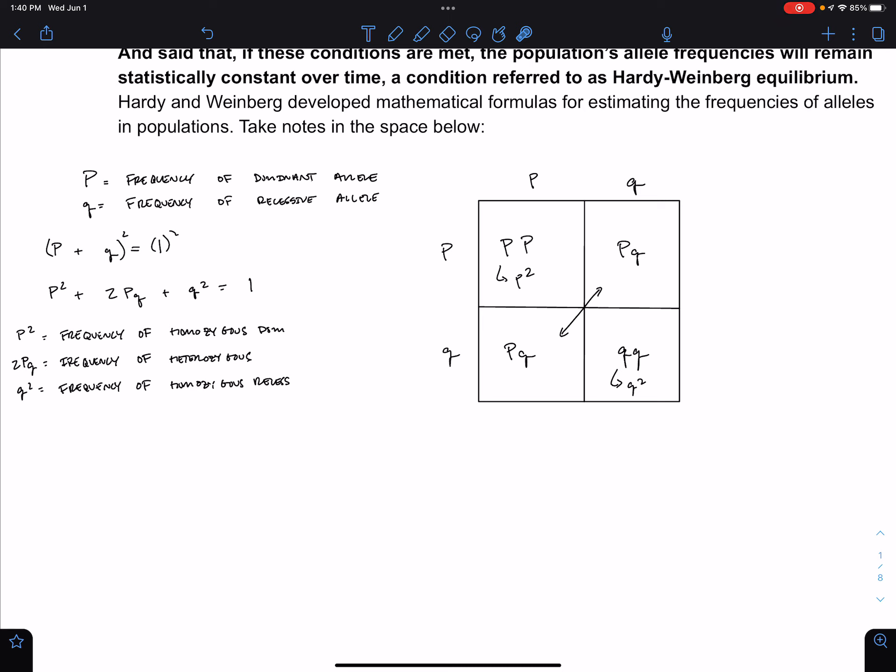The way that you can think of Hardy-Weinberg equation is like a weighted Punnett square. When we're talking about an individual making a cross, we make all the size of the boxes the same, because the possibility that they pass on the P allele or the possibility that they pass on the Q allele is equally likely.